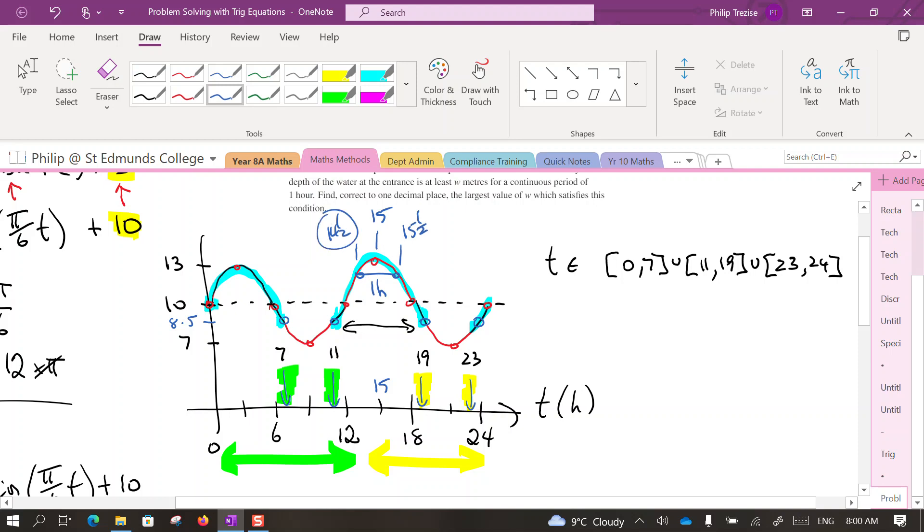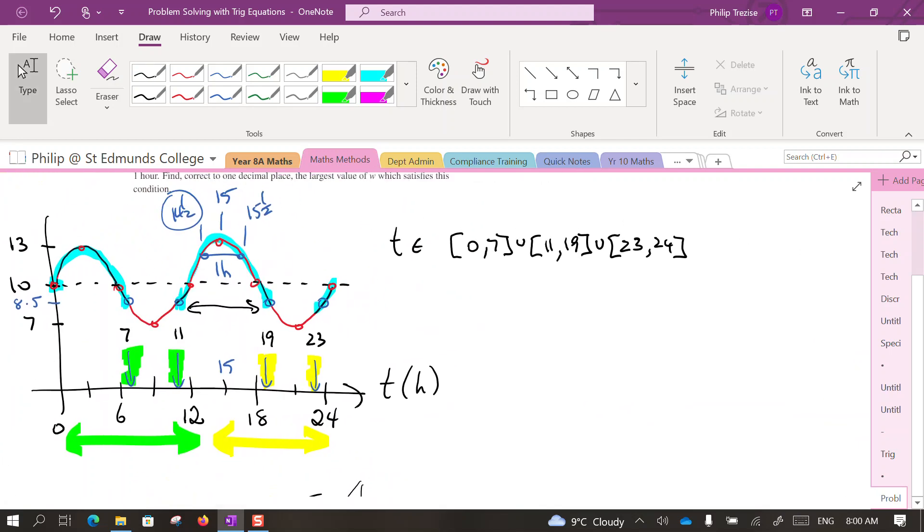So let's do that. The depth of the water was 3sin(π/6 × t) + 10. Now it wouldn't matter if we did 14 and a half or 15 and a half. Let's go 14 and a half for time plus 10.